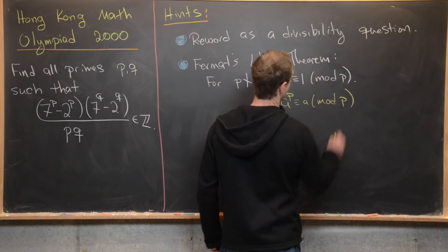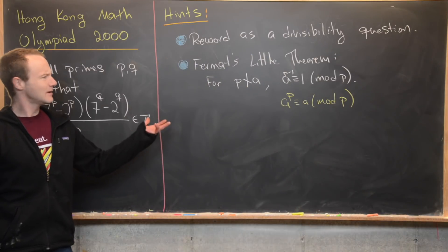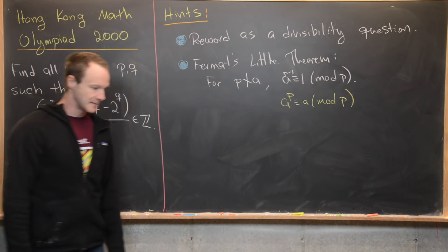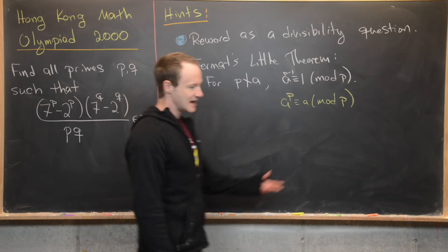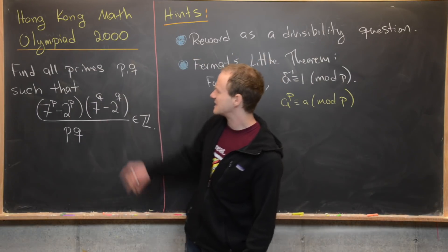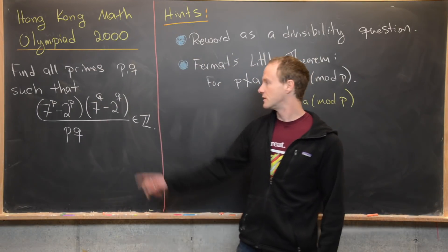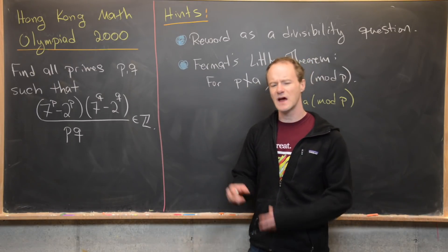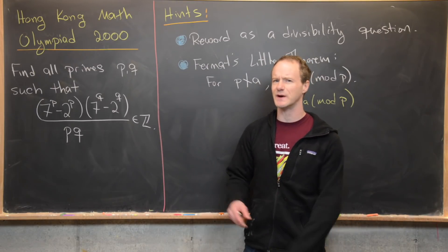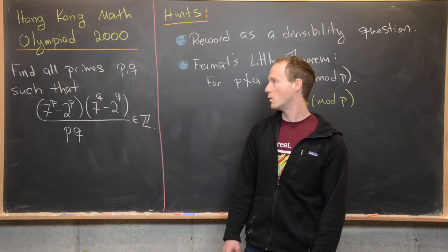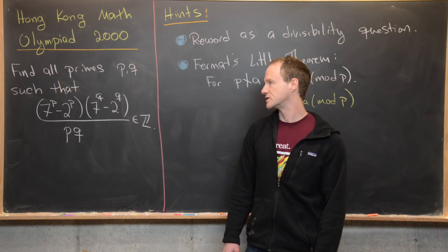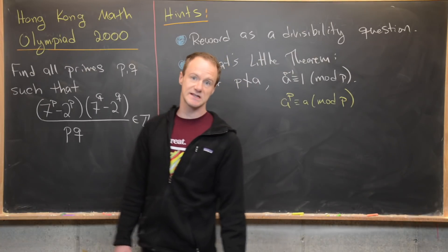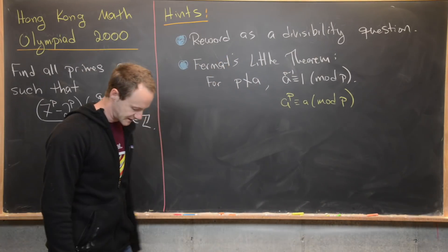Let's write that down. There's one more hint: notice we've got 7^P - 2^P and 7^Q - 2^Q, which gives you a hint about what one of the primes should be. Give this a go with these hints and we'll come back with the solution.